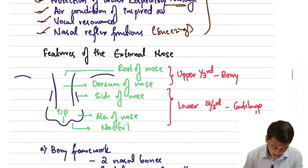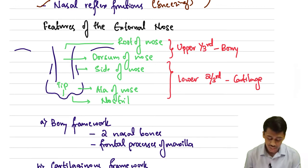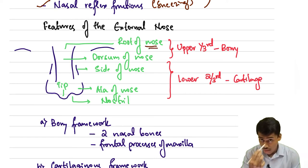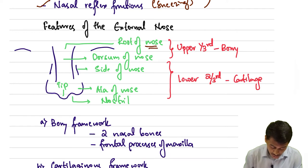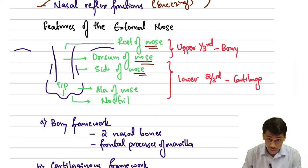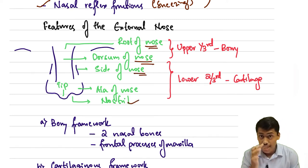Now let's move on to the features of the external nose — what are the parts of the nose that you can see? We have the root of the nose, the dorsum of the nose, the side of the nose, the tip of the nose, the ala of the nose, and the openings called the nostrils.